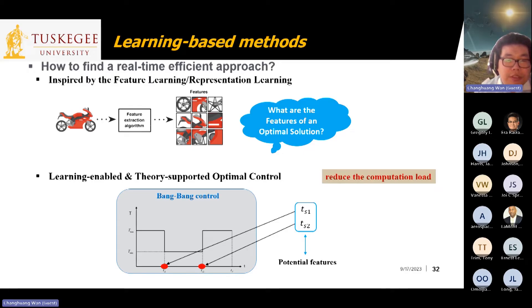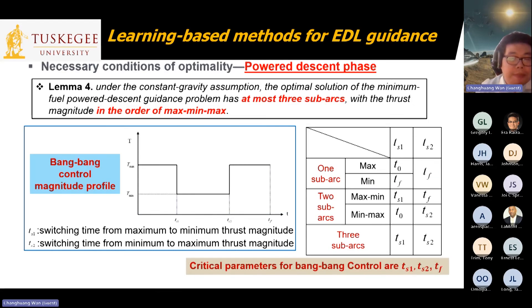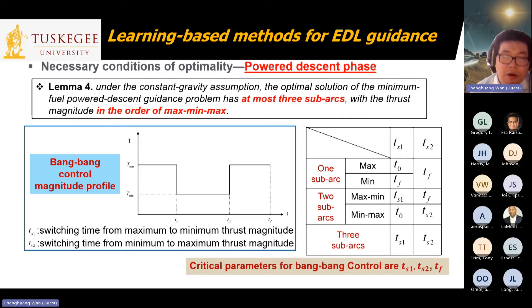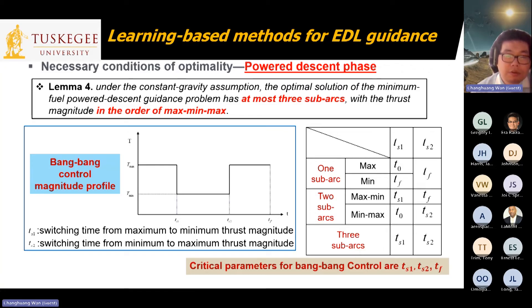For example, for the powered descent phase, it has been proven that the optimal control should be a bang-bang control. Using the necessary conditions from optimal control theory, we can prove the optimal thrust magnitude follows a bang-bang structure with maximum and minimum values. If we know the switch time from maximum to minimum, from minimum back to maximum, and also the final time, we can exactly reconstruct the optimal control law. We call these three values the characteristic parameters. Similarly, for the entry phase, we identify corresponding characteristic parameters to reconstruct the optimal control law.